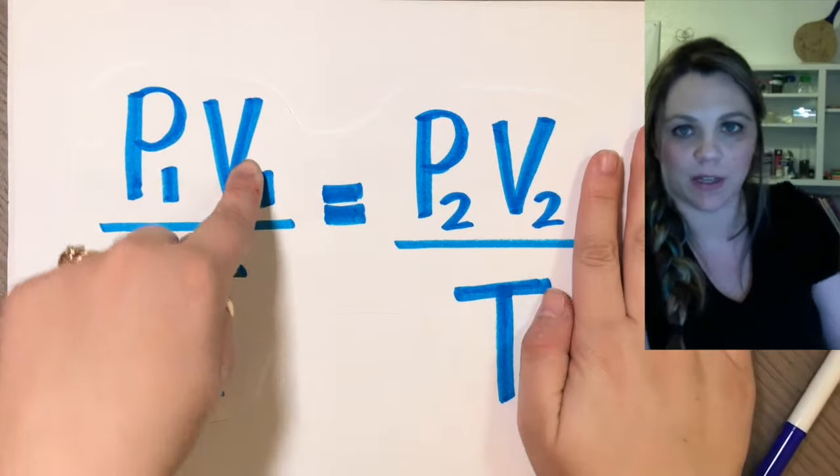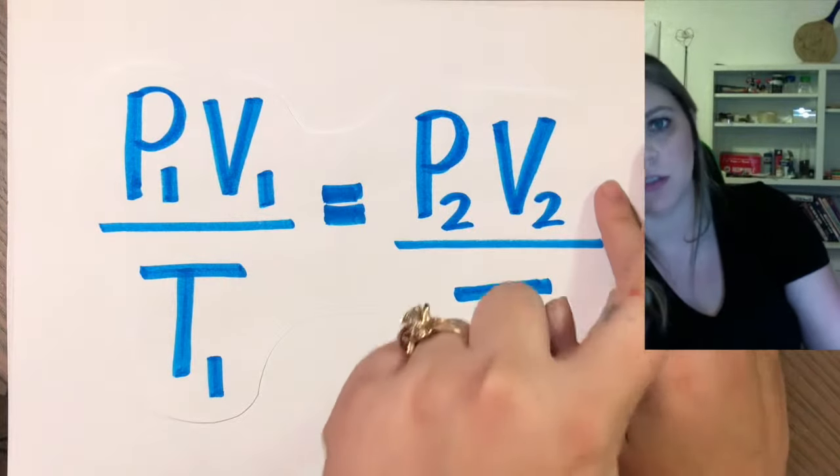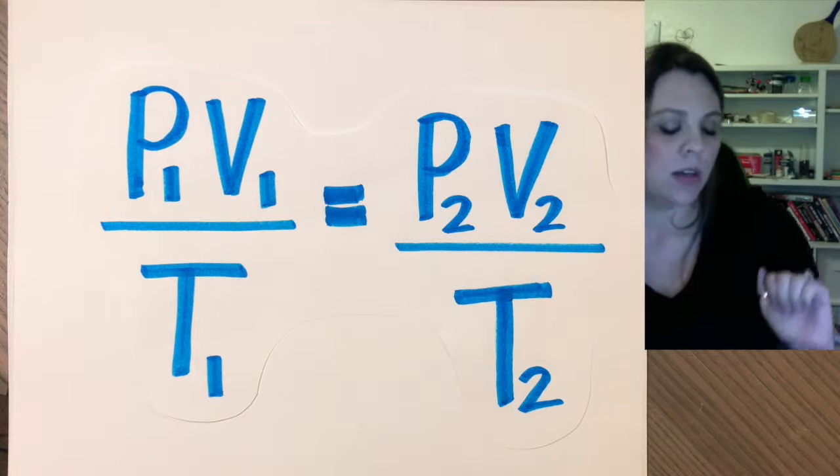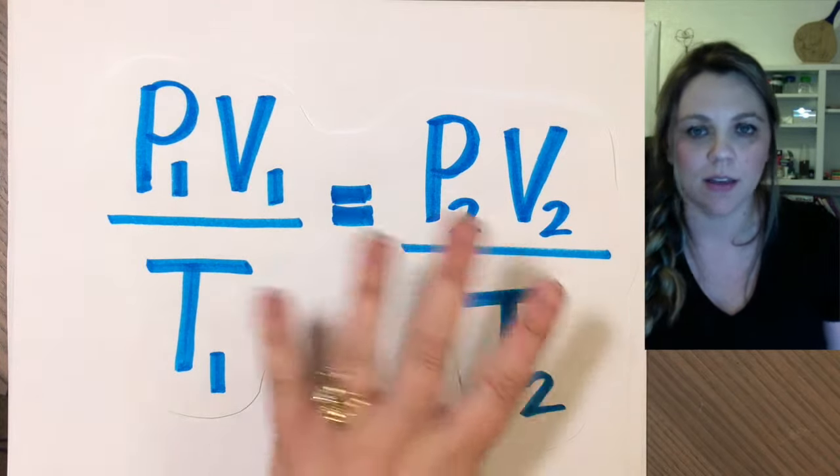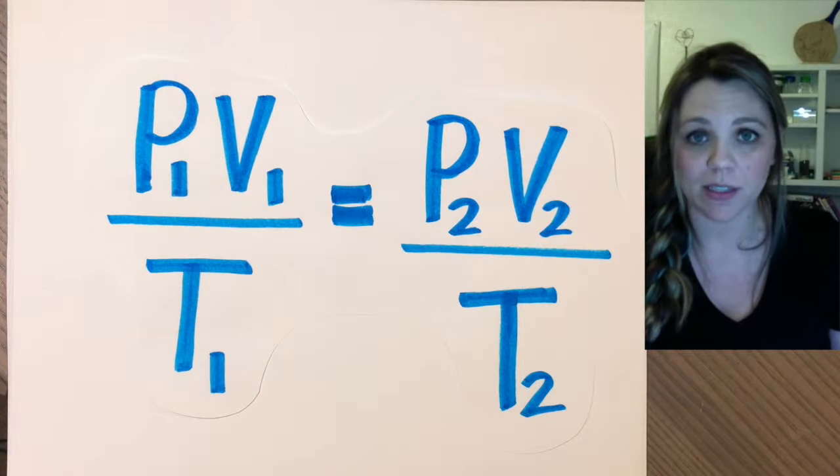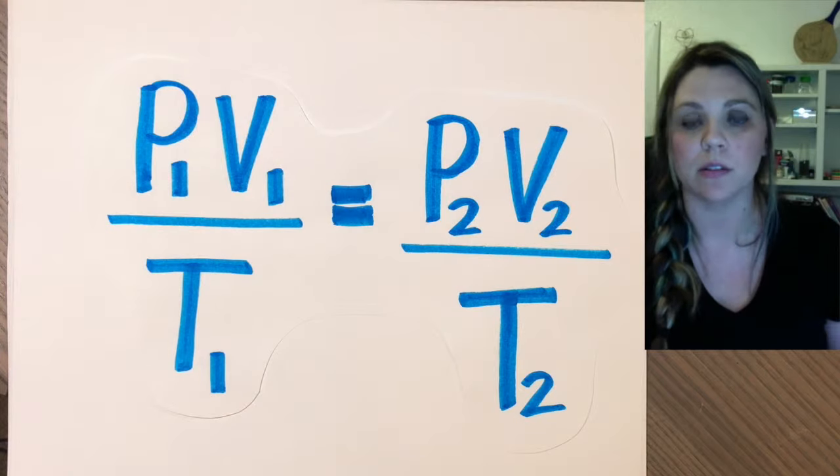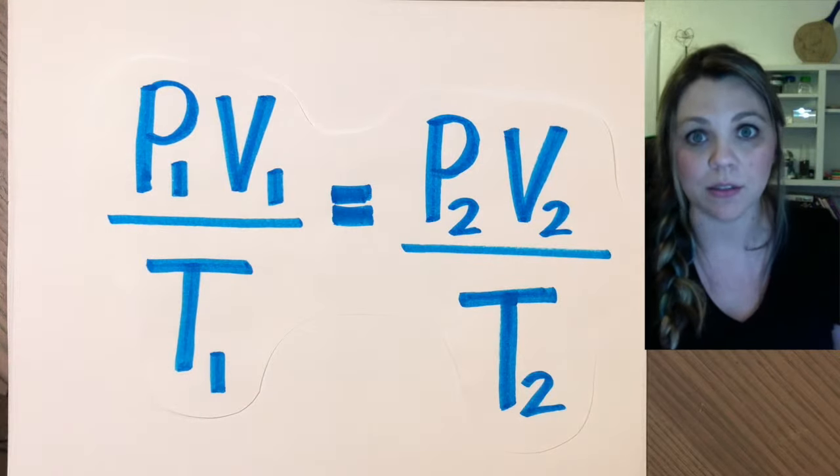So, P1 times V1 divided by T1 equals P2 times V2 divided by T2. If nothing else, I know that this one's on the back of your periodic table. And if you totally forget Boyle's and Charles's and Gay-Lussac's law, who cares? Because they're all actually within the combined gas law.